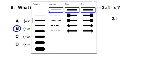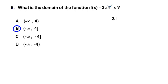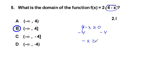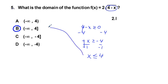Analytically, we know the expression under the radical must be greater than or equal to 0: 4 − x ≥ 0. Subtracting 4 from both sides gives −x ≥ −4. Dividing by −1 and flipping the inequality sign gives x ≤ 4, which translates to answer choice B.